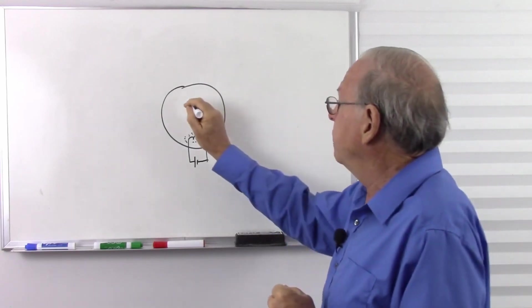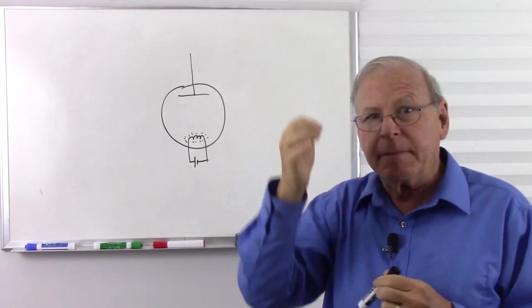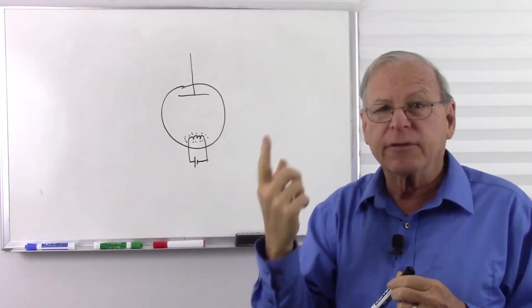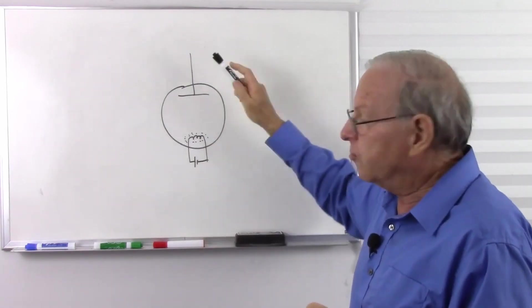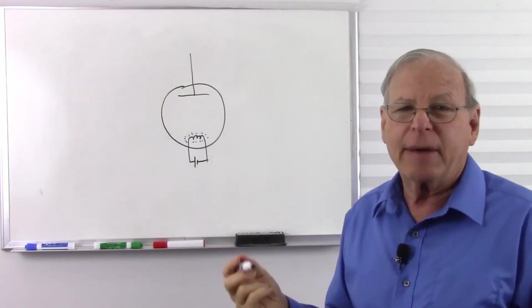So the next thing we do is we put a plate in there, a plate of metal. In the real construction we would have the filament in the middle and the plate would be a cylinder around the filament. But in the schematic we draw it this way and it's easier to draw what's going on drawing it like the schematic. So here we go.